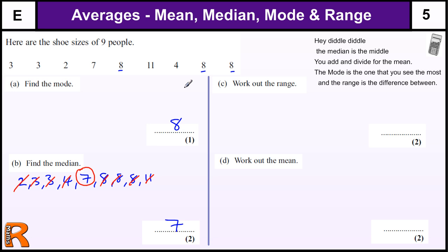Work out the range, the difference between the highest and the lowest. So eleven take away two. And there's two marks for this because there's one mark for that calculation, one mark for the answer.